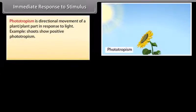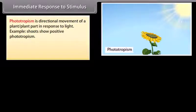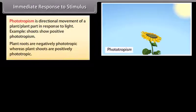Phototropism is the directional movement of a plant or plant part in response to light. Example: shoots show positive phototropism. Plant roots are negatively phototropic whereas plant shoots are positively phototropic.